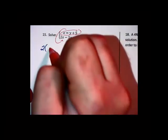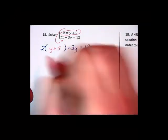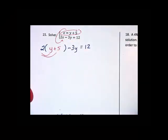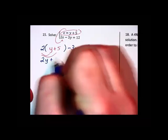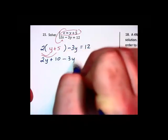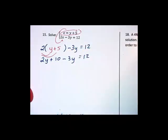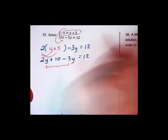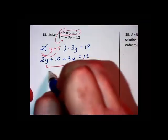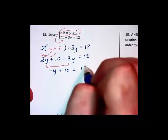And the input here is y plus 5. Do some distribution. We have 2y plus 10 minus 3y equals 12. Combining like terms, we're going to get negative 1y. So negative y plus 10 is equal to 12.